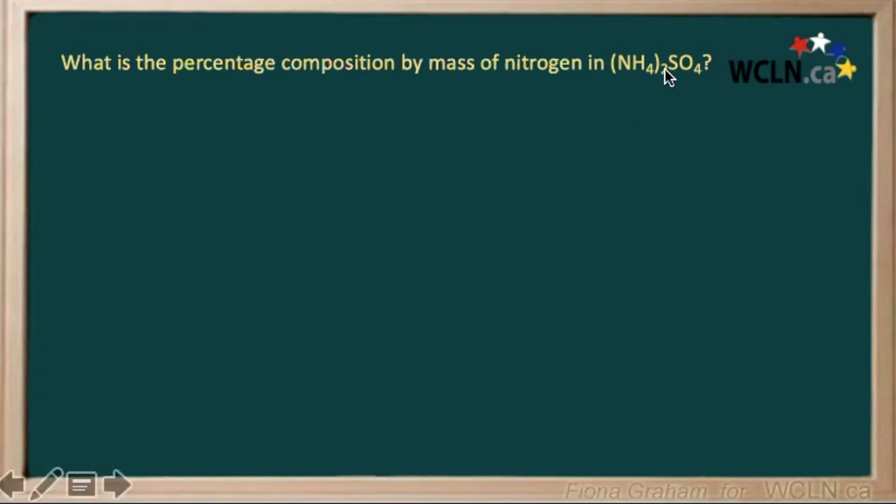To answer this, we first have to calculate the mass of our nitrogen in the ammonium sulfate, and then we'll calculate the mass of our whole compound, and then find the ratio of these two masses.